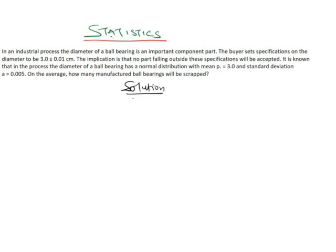We are given a range of diameters from 3 plus or minus 0.01 — these are the diameters that will be accepted. Any diameter of a ball bearing outside this range, either greater or less than this, will be rejected. This is what we are asked to find: on average how many manufactured ball bearings will be scrapped. We are given the mean as 3.0 and the standard deviation as 0.005.